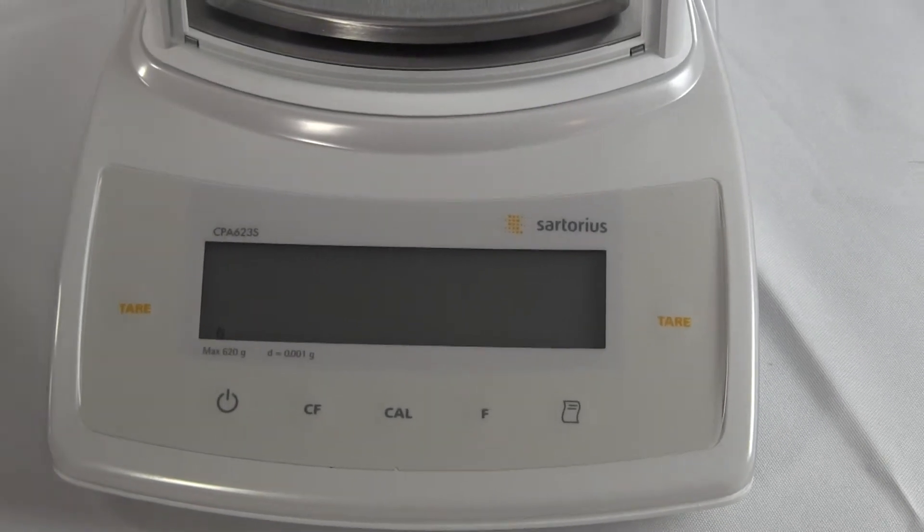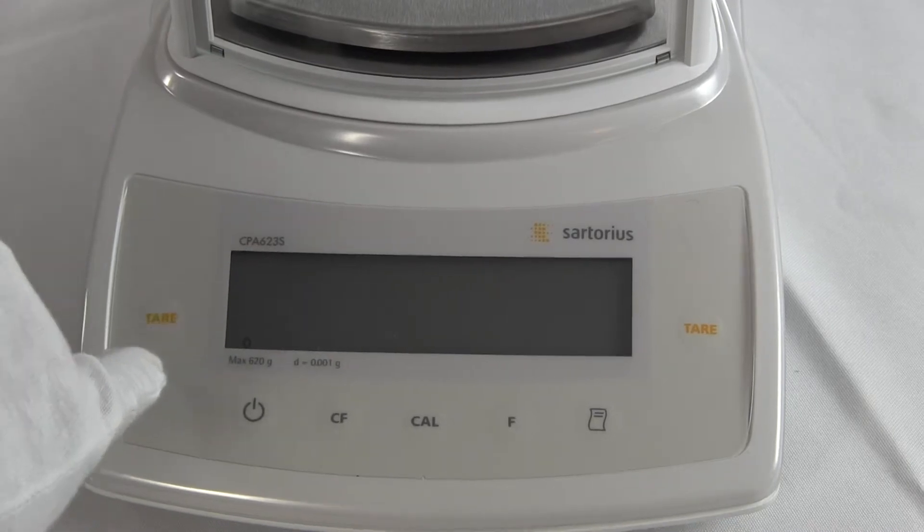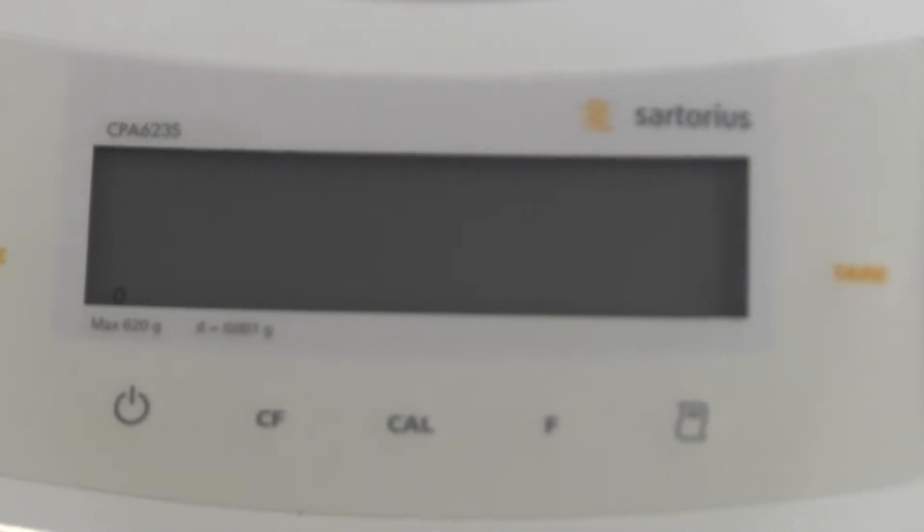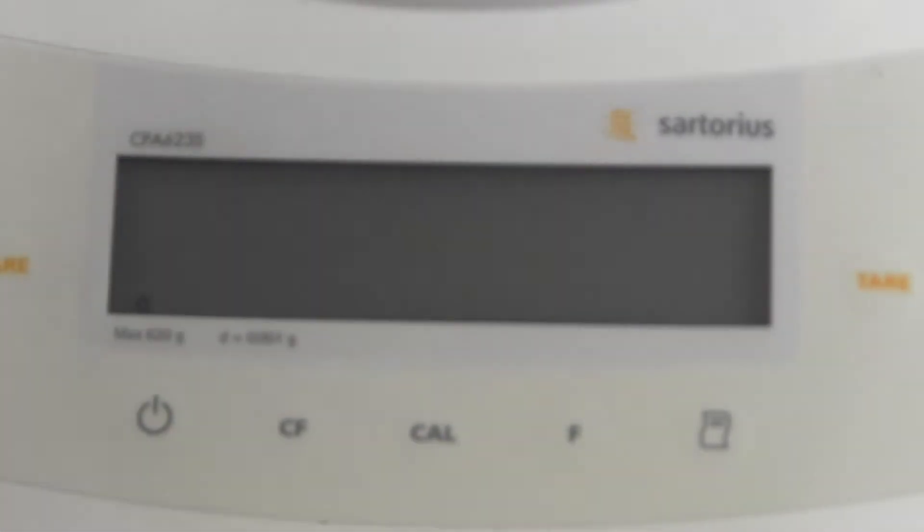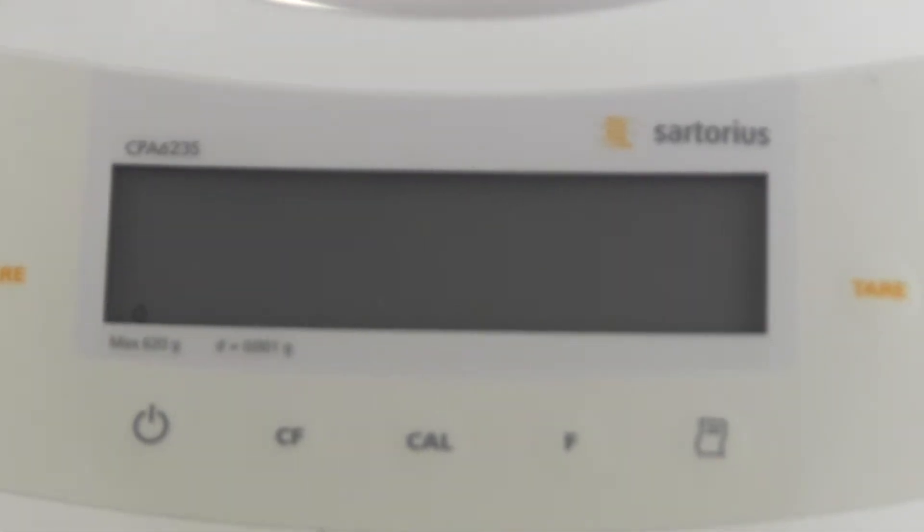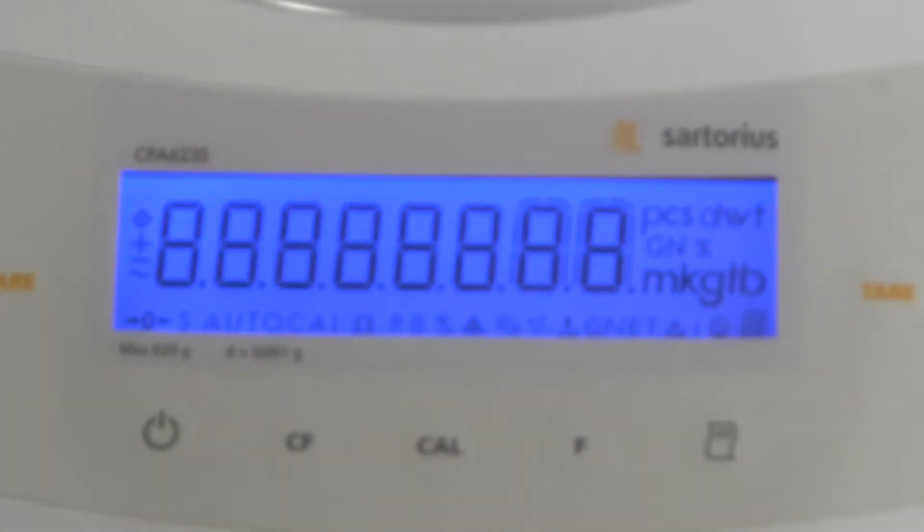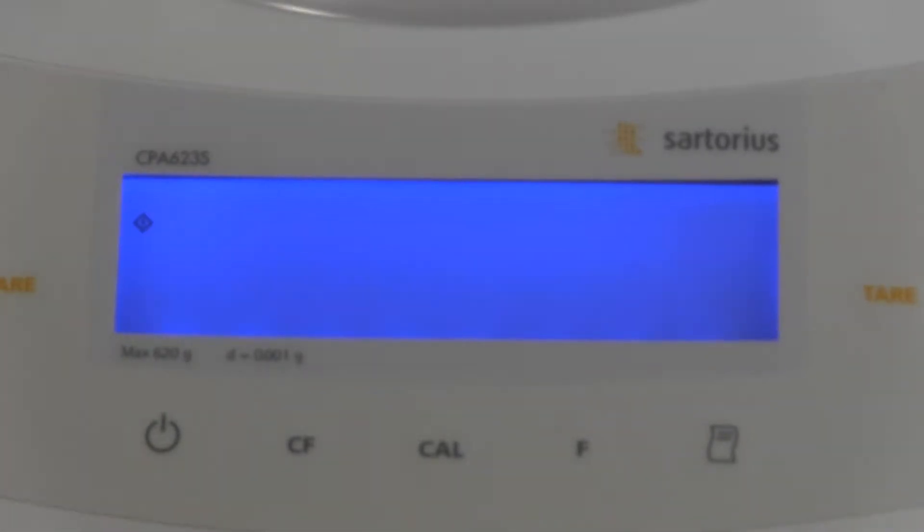So I just turned off the balance. You'll notice in the lower left-hand corner, there's a circle here. That circle means that the balance is receiving power. You always want to keep your balance plugged in because balances are sensitive to temperature and warm-up times. Before calibrating any balance, you really should have it plugged in for 30 minutes. So that little circle in the lower left-hand corner tells us that the balance is powered up. When we press the button to turn it on, all the numbers illuminate, and then it goes right to zero.